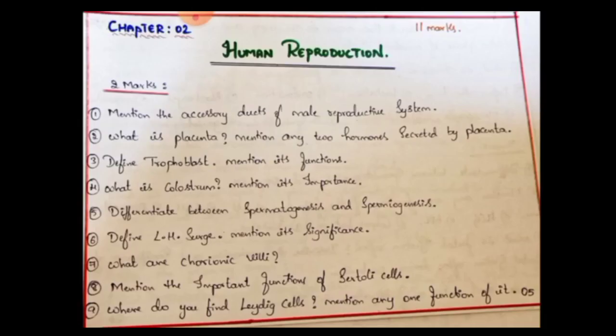Next chapter: Human Reproduction. Similar to Chapter 1, there are three one-mark questions, and marks are distributed as 1, 2, 3, and 5 marks — with three important questions at the end. You need to answer the questions: 3 marks is one question, 5 marks is one question. Two-mark questions are expected.